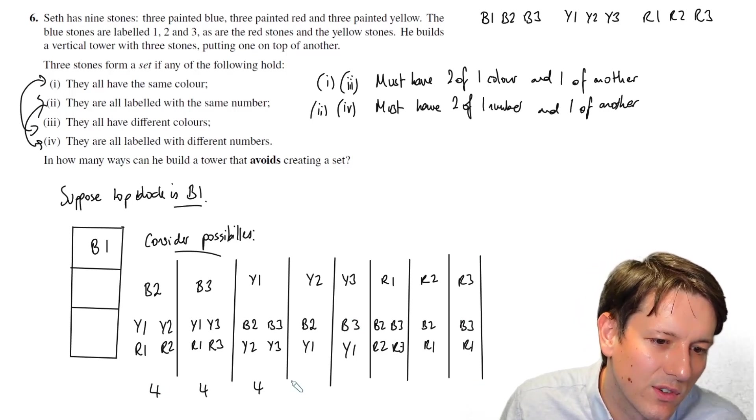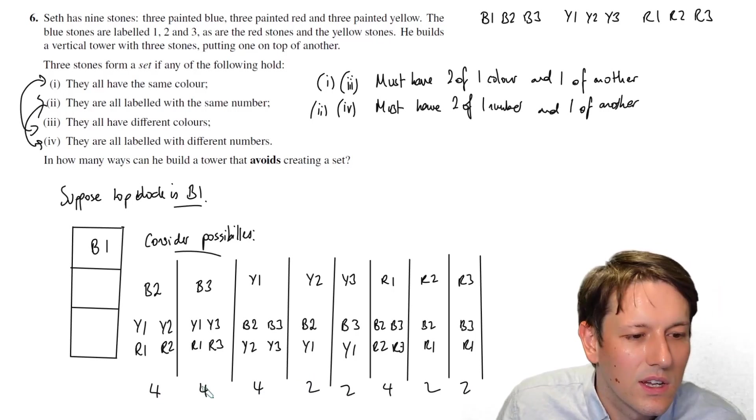I'm going to add these together. I've got 4, 4, 4, 2, 2, 4, 2, 2. 8, 12, 13, 14, 15, 16, 24.